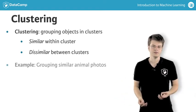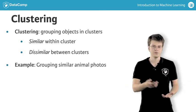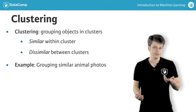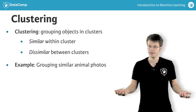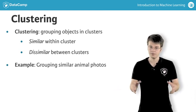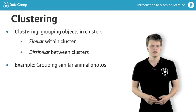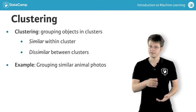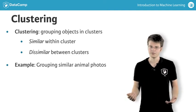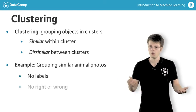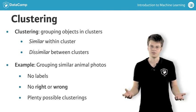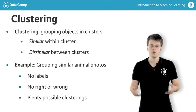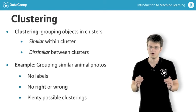Take the animal photos for example. In the case of classification, you had information about the actual animals that were depicted. In the case of clustering, you don't know what animals are depicted — you will simply get a set of pictures, and the clustering algorithm then groups similar photos in clusters. You could say that clustering is different in the sense that you don't need any knowledge about the labels. Moreover, there is no right or wrong in clustering. Different clusterings can reveal different and useful information about your objects. This makes it quite different from both classification and regression, where there always is a notion of prior expectation or knowledge of the result.